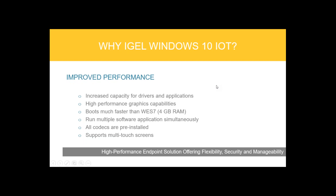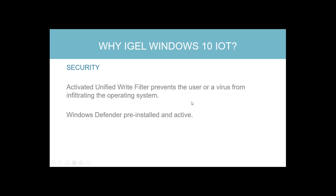Regarding performance: with our Windows 10 IoT devices, we have increased capacity for drivers and applications, high-performance graphics capabilities from the UD5 and UD6 devices, and boot times much faster than our Windows 7 devices. We have 4 GB RAM, all codecs are pre-installed, and we now support multi-touch screens. The Unified Write Filter protects you from viruses, and Windows Defender is pre-installed and active as factory default.